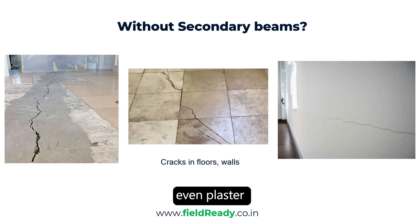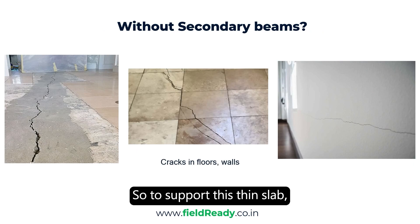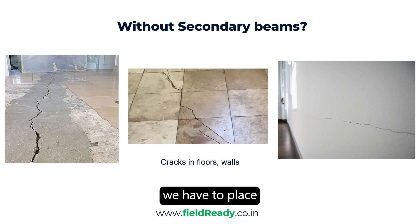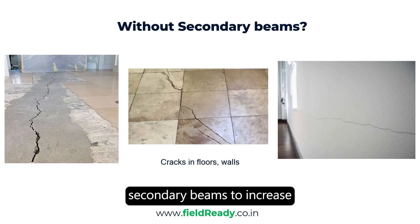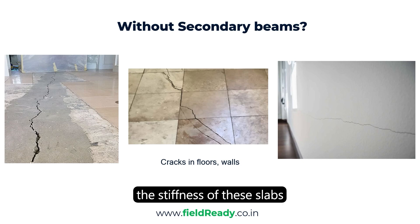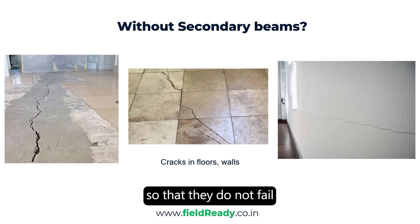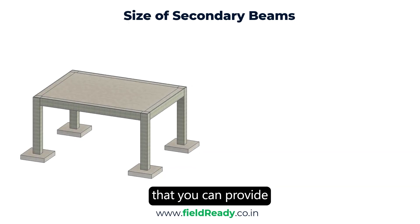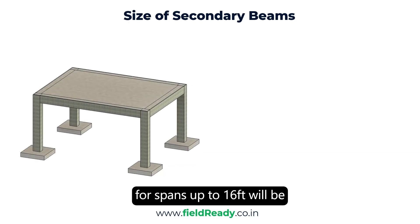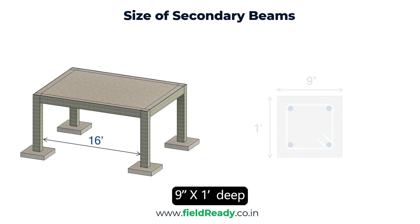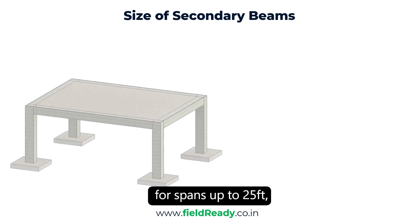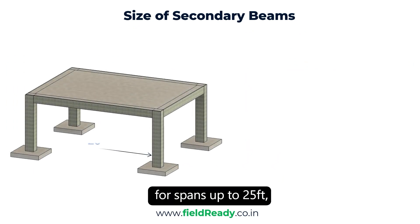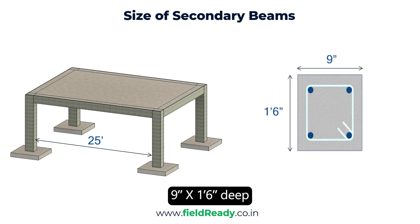Even plaster and false ceilings may fall off. So, to support this thin slab, we have to place secondary beams to increase the stiffness of the slab so that it does not fail under loads. The general size of secondary beams for spans up to 16 feet will be 9 inch by 1 foot deep, and for spans up to 25 feet, it will be 9 inch by 1 foot 6 inch deep.